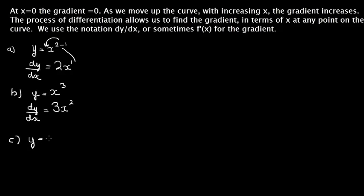Another example, we've got y equals x to the power of 4, probably getting the idea now. Then dy/dx, which is the gradient, equals bring the 4 down, so we've got 4x cubed, 4 minus 1 is 3.